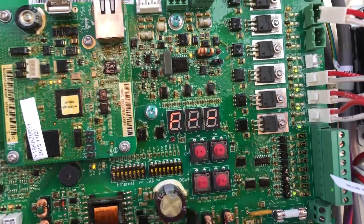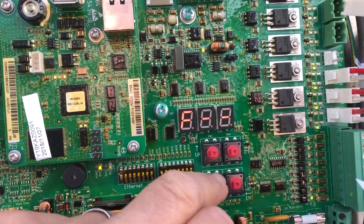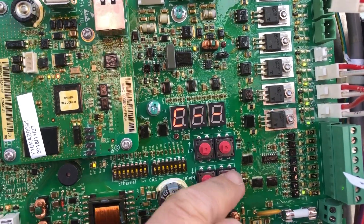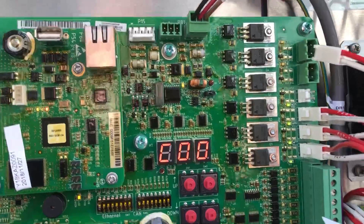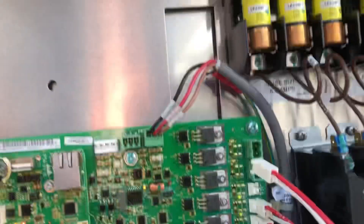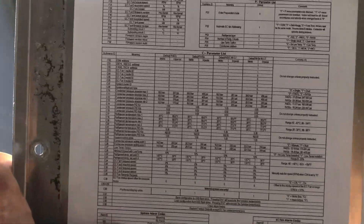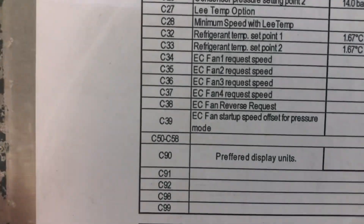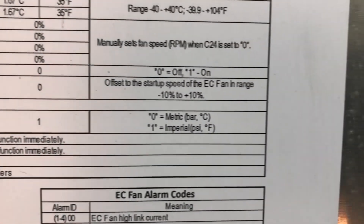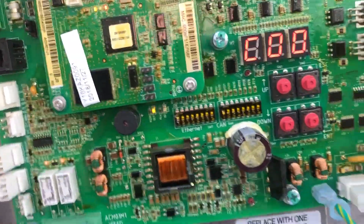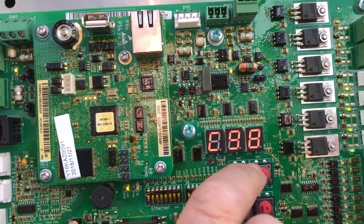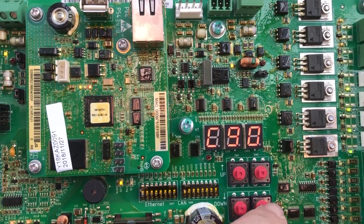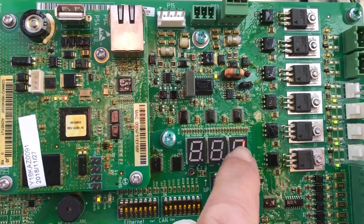Press escape, go down to the C menu. You'll see C00, but the one you need is C90. I know that because right here it says C90 — preferred measurement. Go to C90 and press enter.